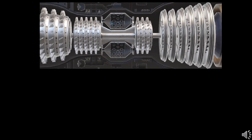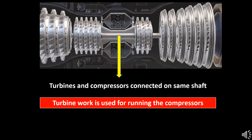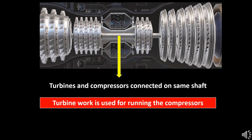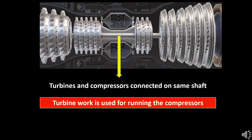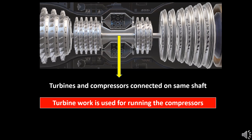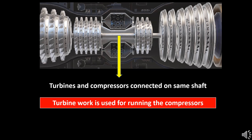The turbine work produced by the hot combustion air is utilized for running the compressors in the front. The compressors and turbines are attached on the same shaft, so when the turbine rotates due to the hot air, the compressor also rotates with the same RPM.